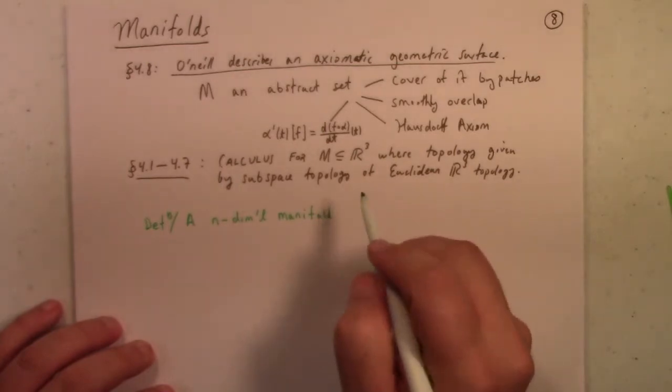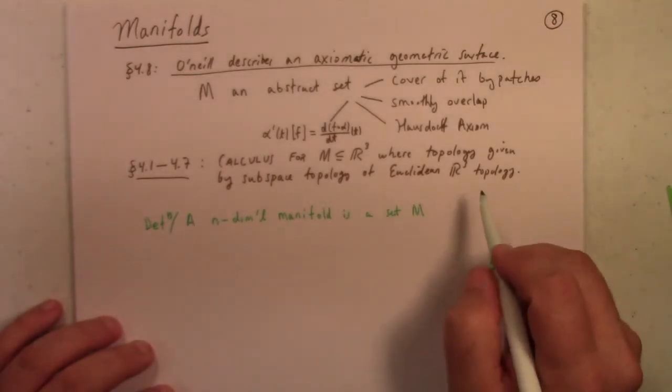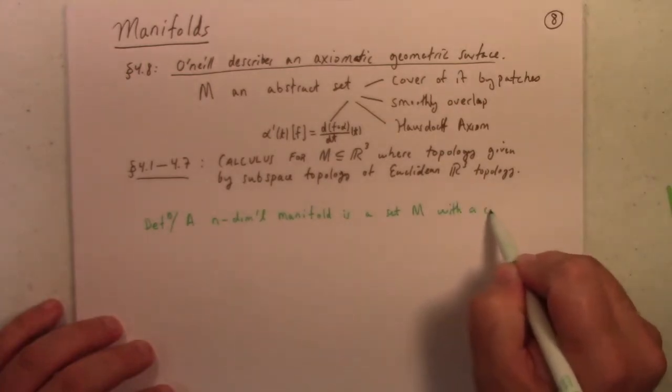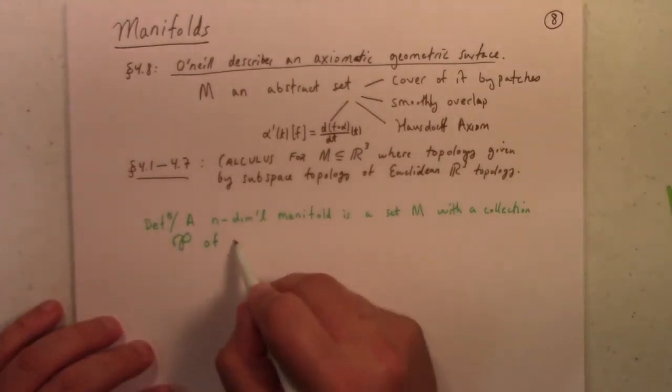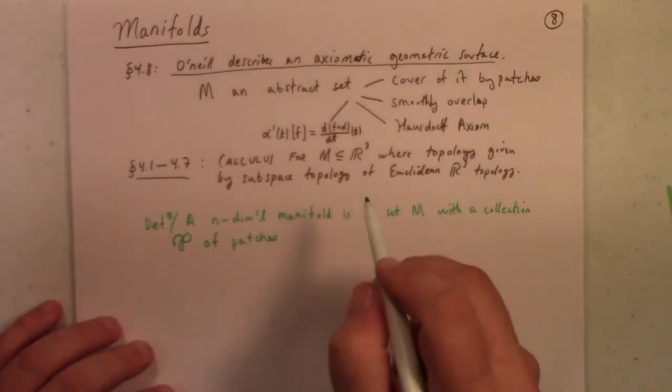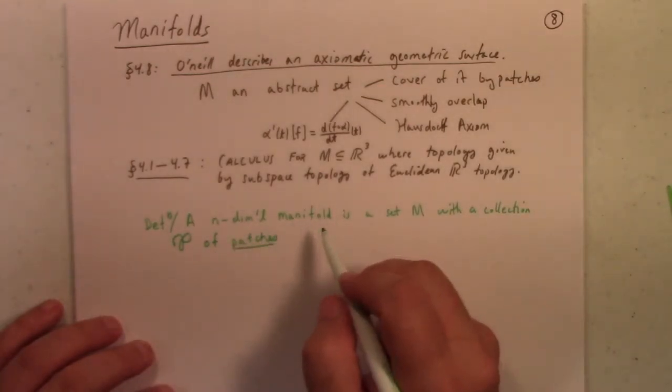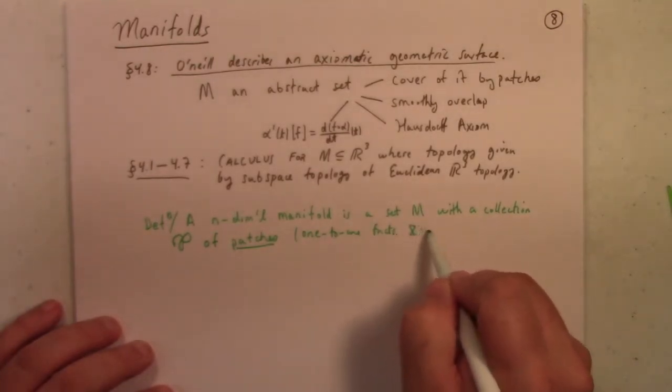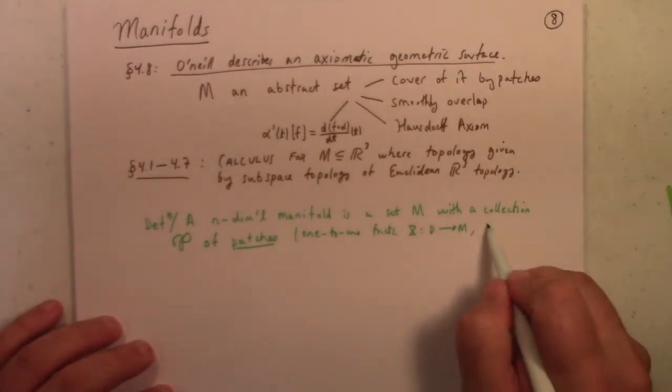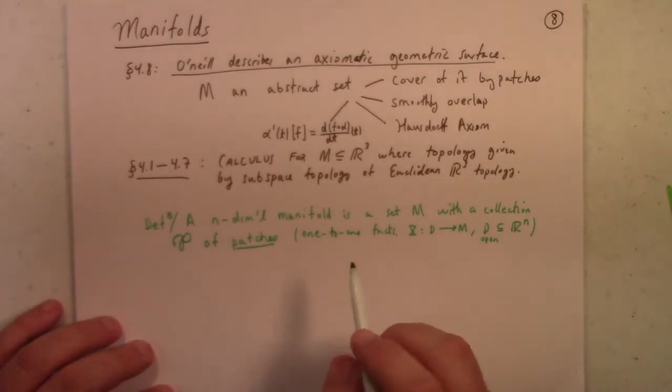An n-dimensional manifold is a set, M, furnished with a collection, P, actually this is not the definition I've seen elsewhere. Everywhere else it talks about charts. It's probably not everywhere else or just in my limited experience. Abstract patches, sorry, I forgot my abstract, which are just one-to-one functions, x that go from d to m, with d open subset of R^n, because we're talking about an n-dimensional manifold. Satisfying.